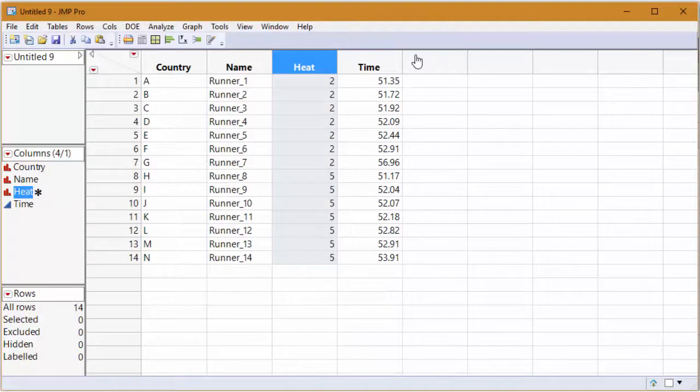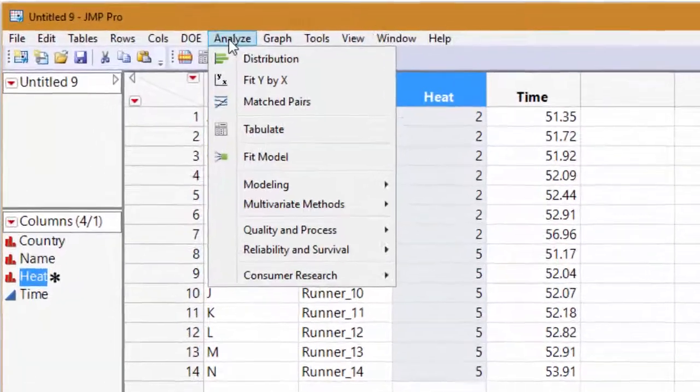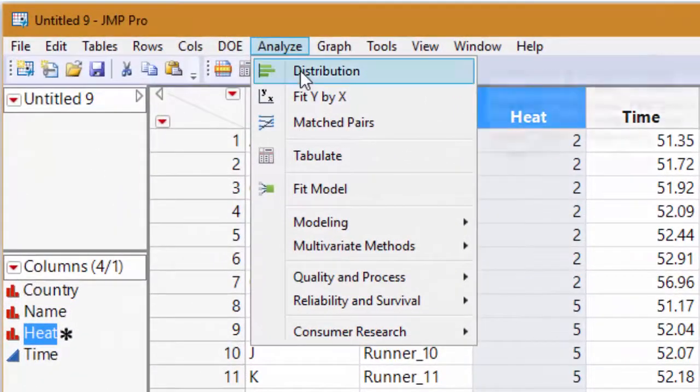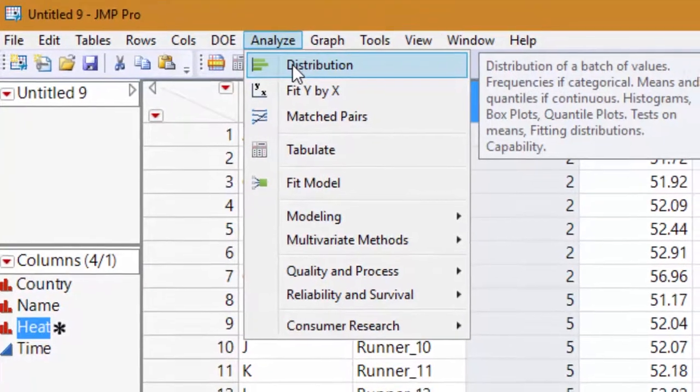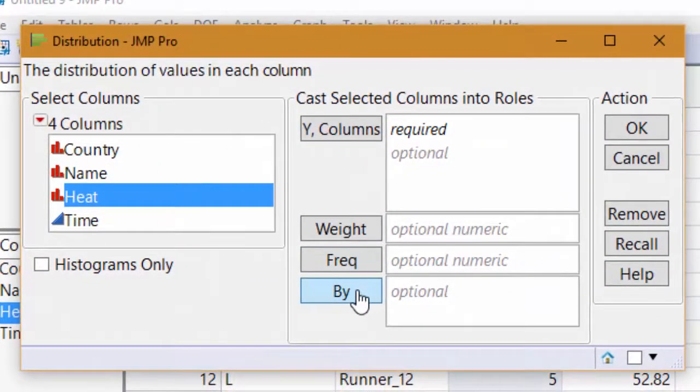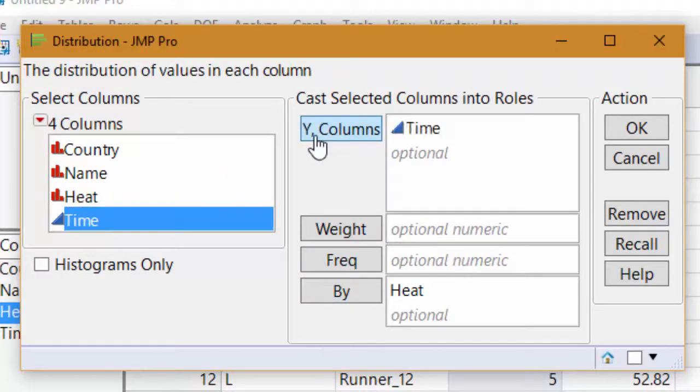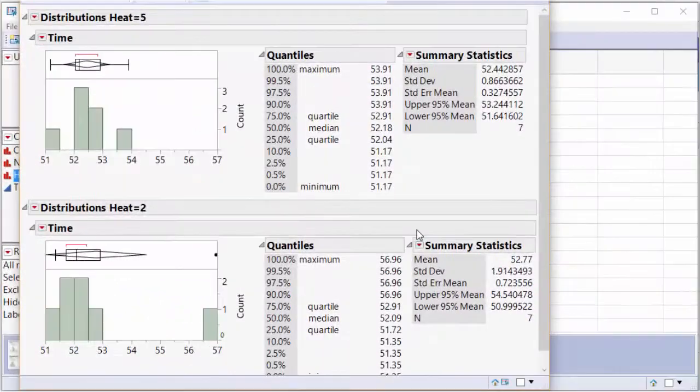Now, let's go ahead and check the conditions. We need to make two histograms to check the nearly normal condition for this data. We will go to analyze and then to distributions to get the histograms. Let's go ahead and do by heat and then click on time and analyze time. Go ahead and click OK. We have our stacked histograms here displayed properly with count axes and also uniform scaling.